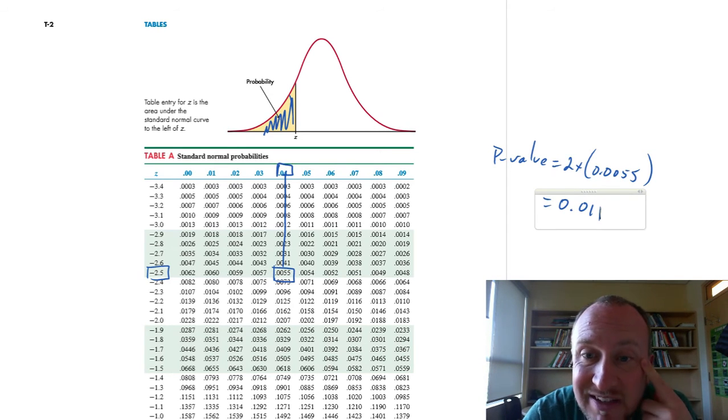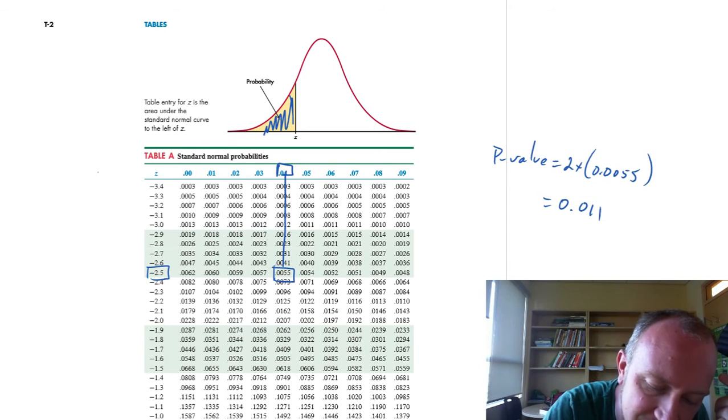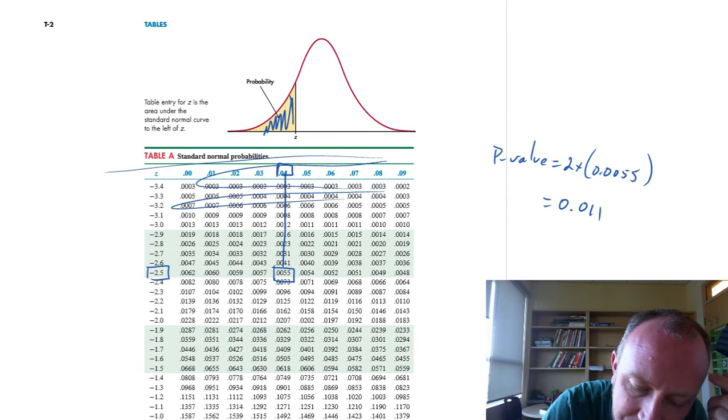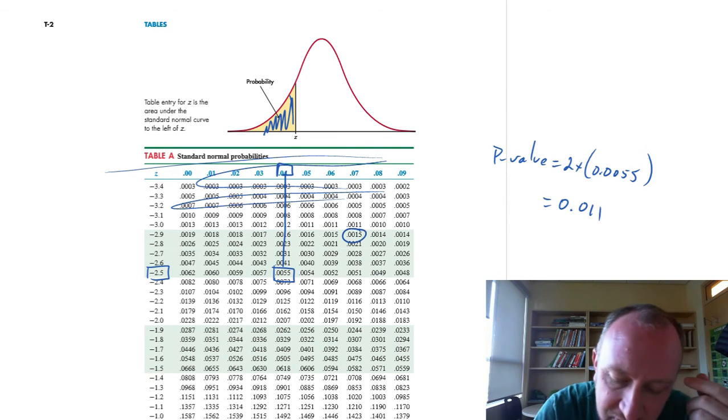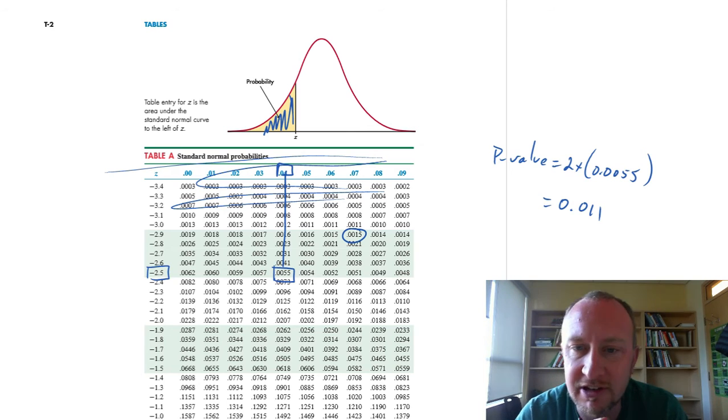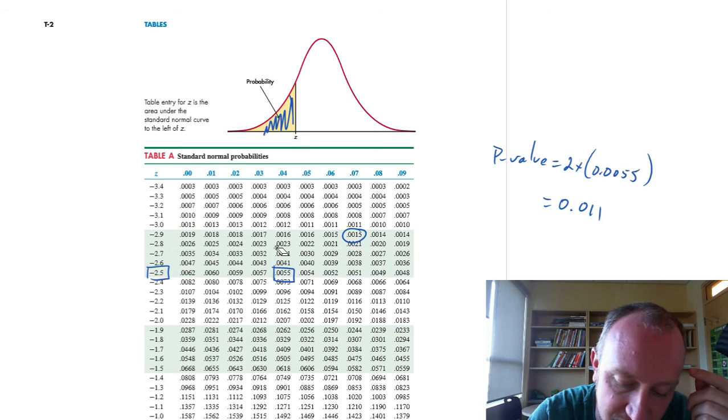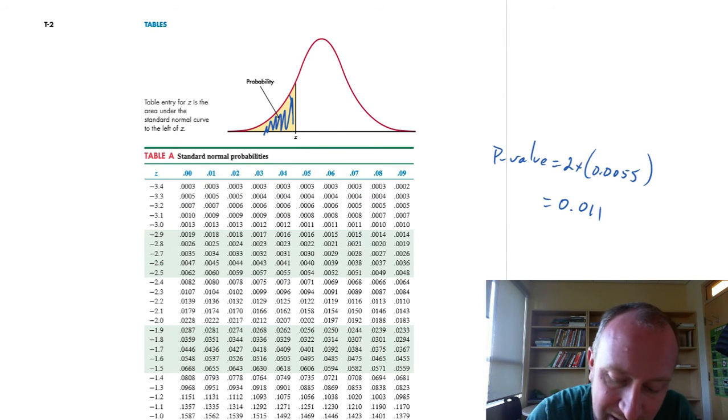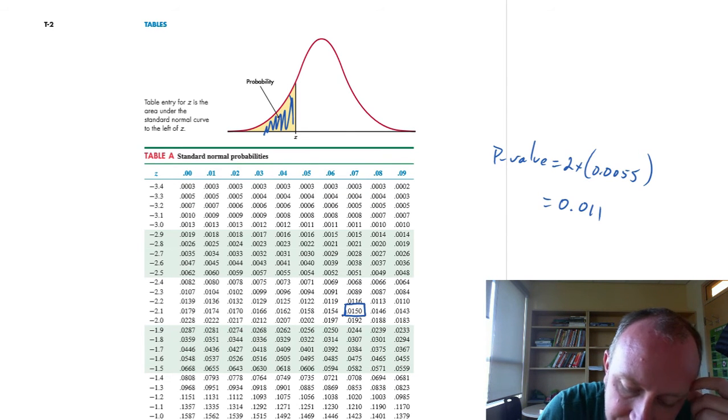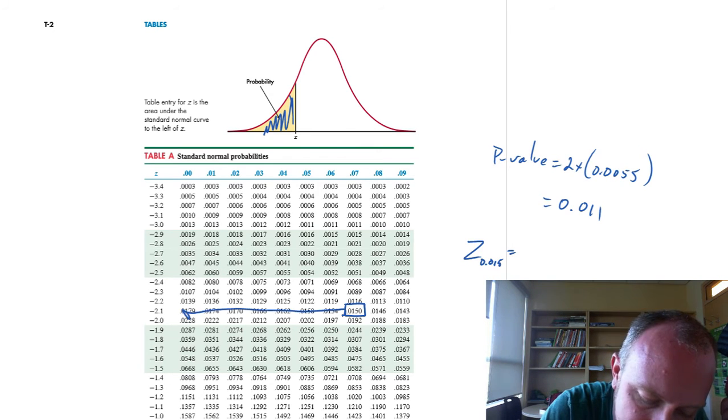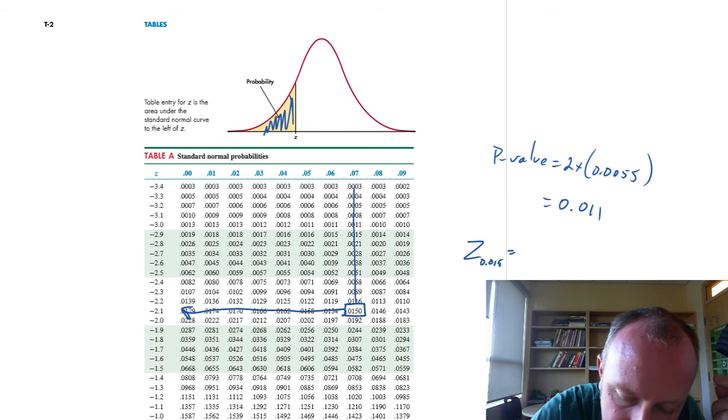So I want to go to our z tables and look for 0.015. And a very common mistake students will make, because you tend to scan from the top and you scan through the table, and students will come to this one first, 0.0015—very common mistake that I see. Often it's just because you're stressed and short on time. But I just want 0.015. You'll find it is right down here.